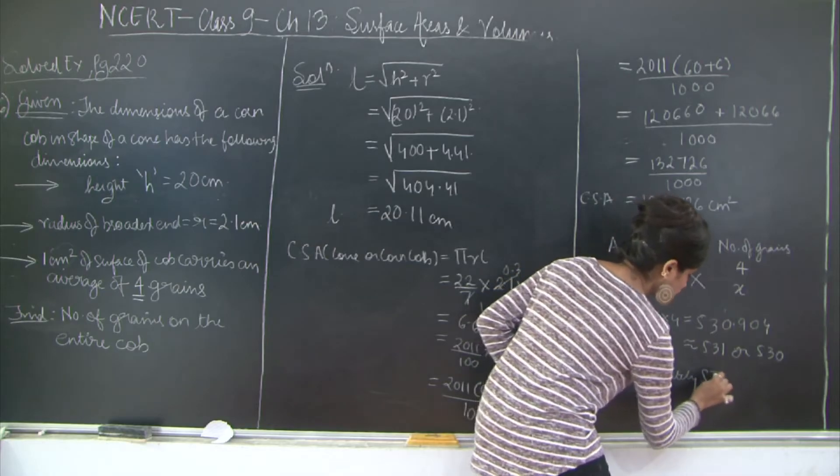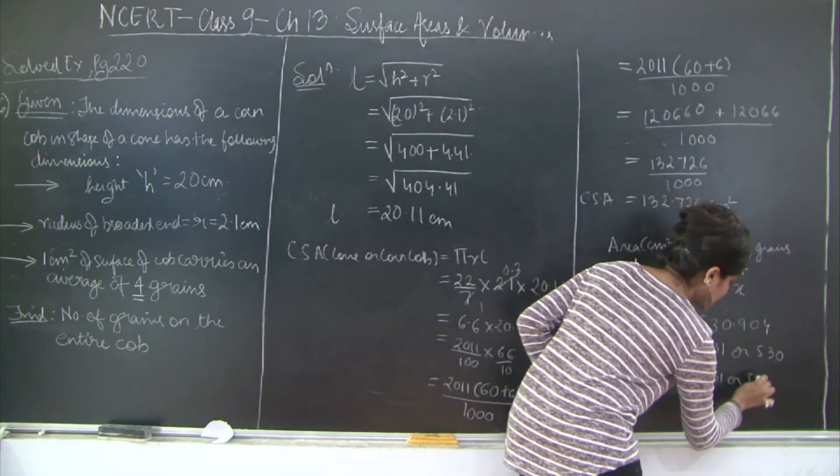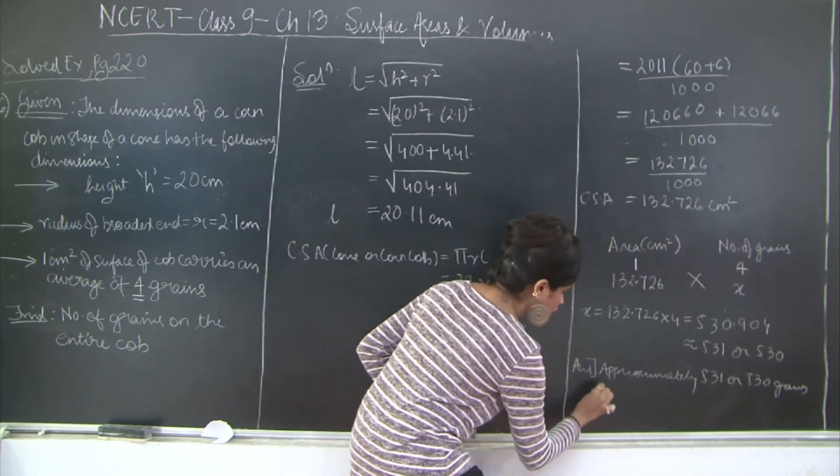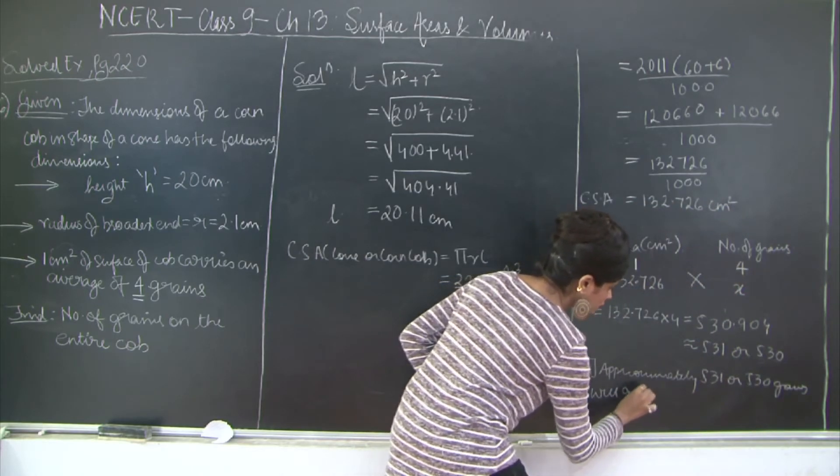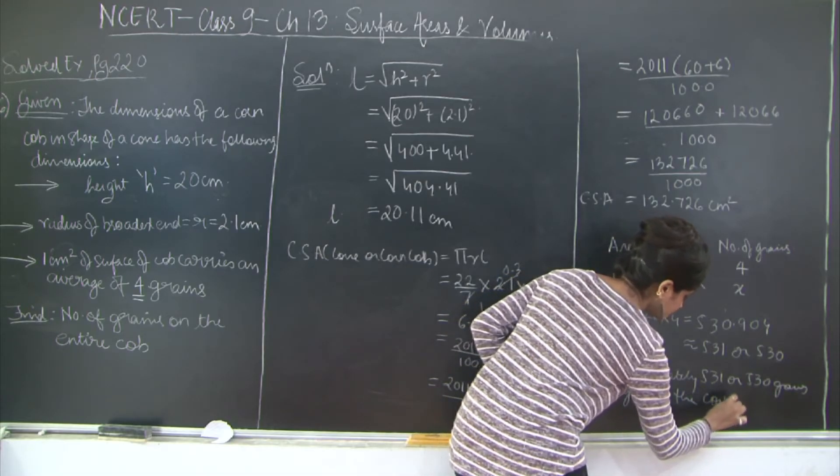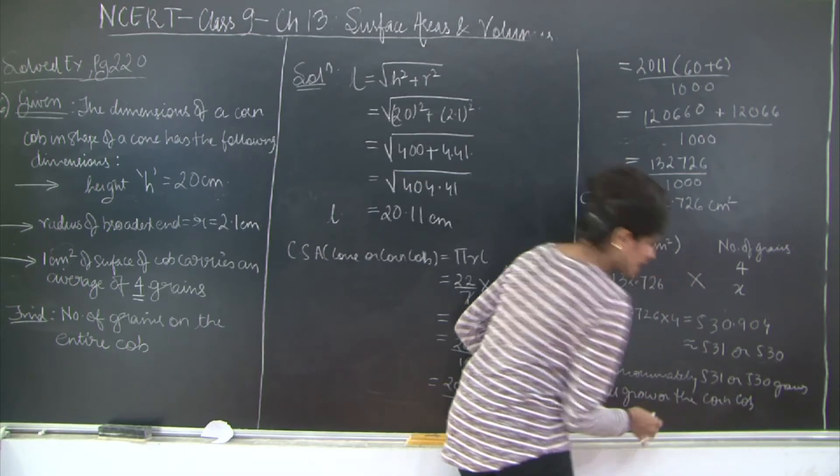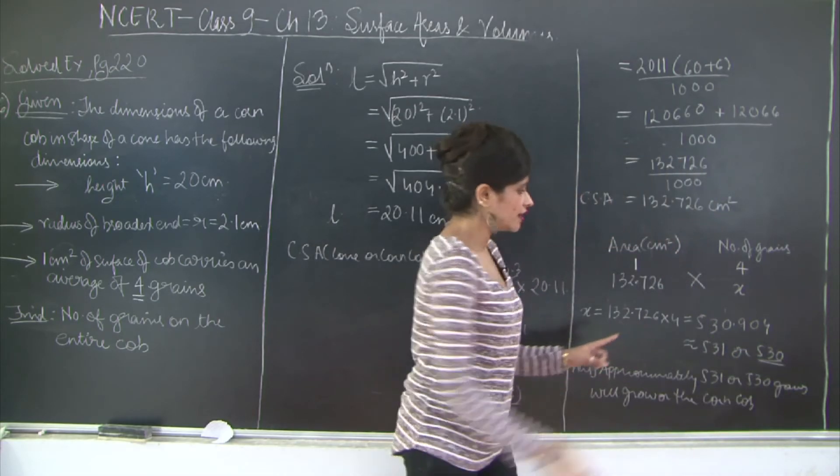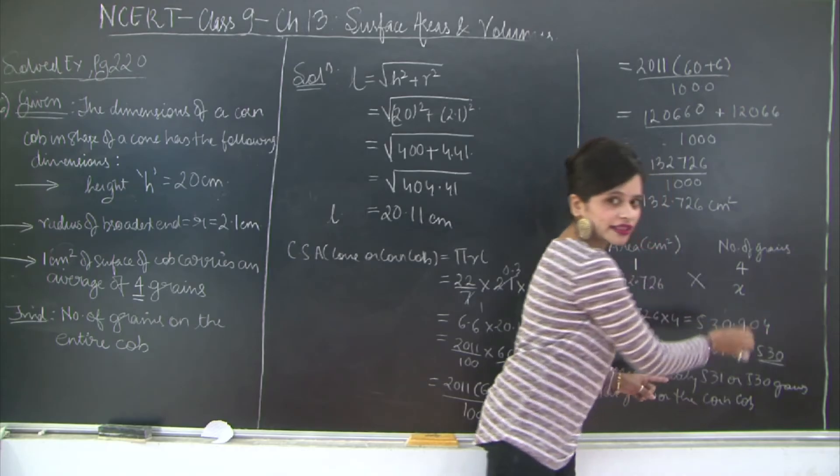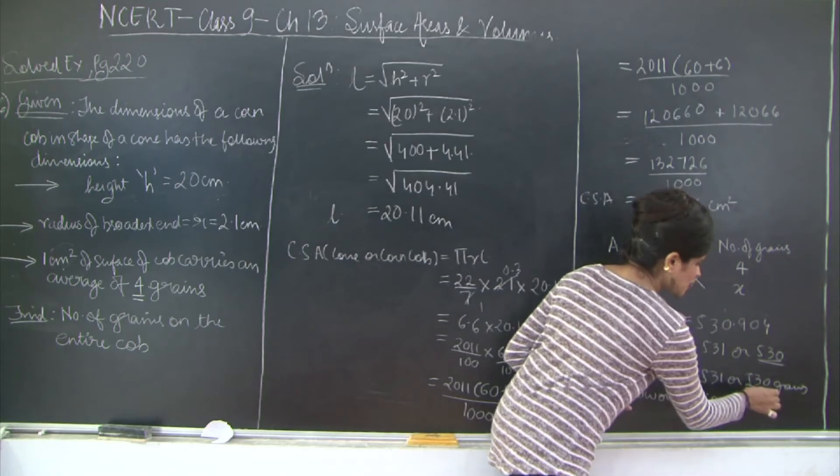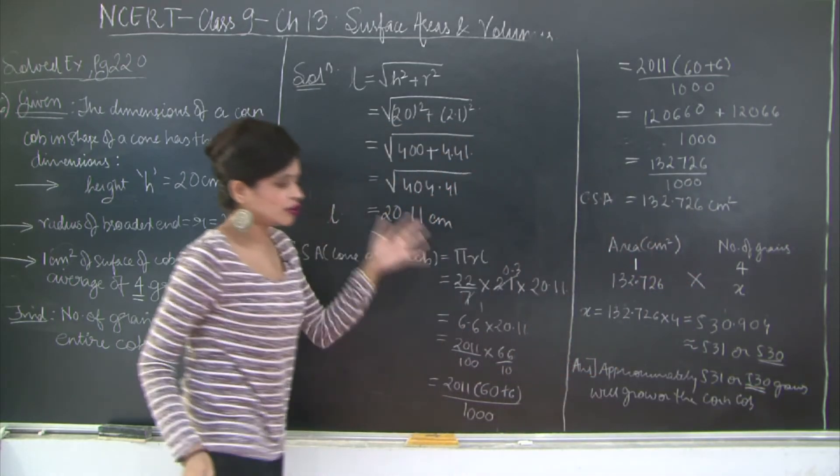But I suggest that you go with this value of 530 because here this is still less than 1. That means at least 530 actual grains are present. So this is the suggested value.